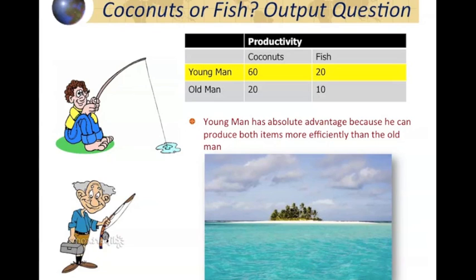One thing we might instinctively say is that the young man doesn't really need the old man — he can produce much more, more than double the output of coconuts and fish. So why bother with the old man? This begs the question: should the young man self-sustain, or can there be benefits from connecting with the old man? This is like the United States having an absolute advantage in production — why would we trade with nations that are inferior to us? Well, this boils down to what's called comparative advantage. It's still possible to benefit from trade even if you have an absolute advantage.